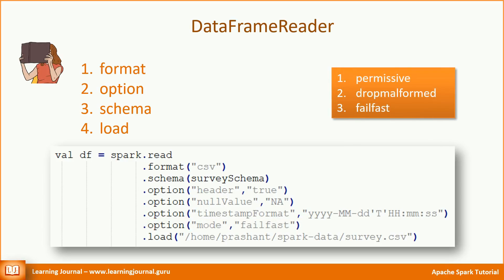You can set one of three values: Permissive, Drop Malformed, and FailFast. The default value is Permissive. If you set the mode to Permissive and encounter a malformed record, the DataFrame Reader will set all the column values to NULL and push the entire row into a string column called _corrupt_record. This corrupt record column allows you to dump those records in a separate file so you can investigate and fix them at a later stage. The Drop Malformed option will quietly drop the malformed records — you won't even notice that some rows were not accurate. And the FailFast method raises an exception.